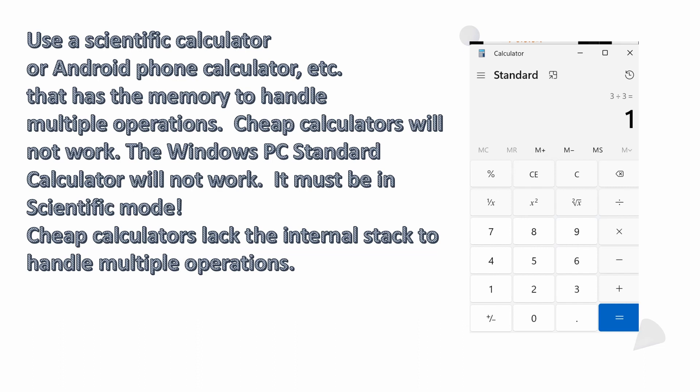One of the most frustrating things is this screenshot from Windows 11, the latest Microsoft Windows. The Windows PC standard calculator also will not work. What it does, it only can remember one operation. So as you're typing that in, the last thing that this calculator knows is 3 ÷ 3 = 1.